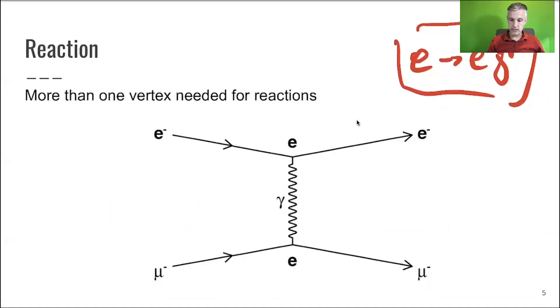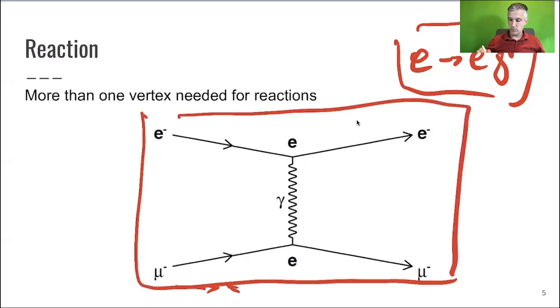So you need a couple of vertices in order to make a reaction. So this here, we have potentially the time going in this direction. It's a scattering between an electron and a muon through the exchange of a photon. Both particles have an electric charge of e, and then you can just calculate what is the probability for a process like this to occur.